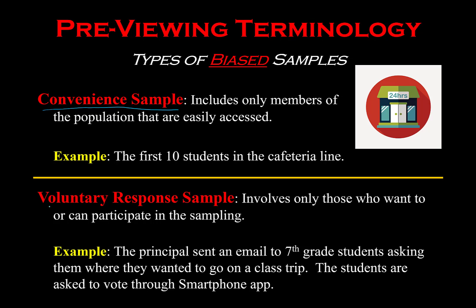A voluntary response sample is one that you really have to watch for in real life when you are a consumer of data analyzing whether it is meaningful. Voluntary response is exactly what it sounds like — people volunteer to provide their input. The reason why that is bad is because only the people who wanted to participate provide the data. Also, one group may be left out because of a certain condition. For example, if the principal was collecting votes through a smartphone app, not every student at the middle school owns a smartphone, so their opinions would not be collected — making it biased, since only people with cell phones can give their opinion.